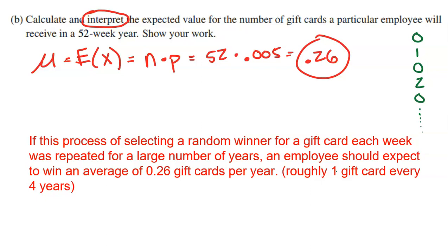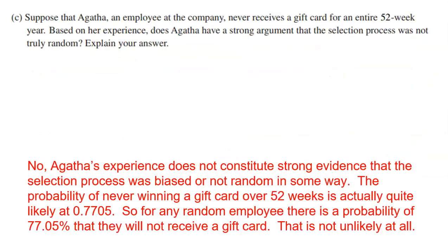It doesn't guarantee it, but on average one gift card should come your way every four years. A mean or expected value represents what we expect in the long run if this random variable were repeated many, many times.